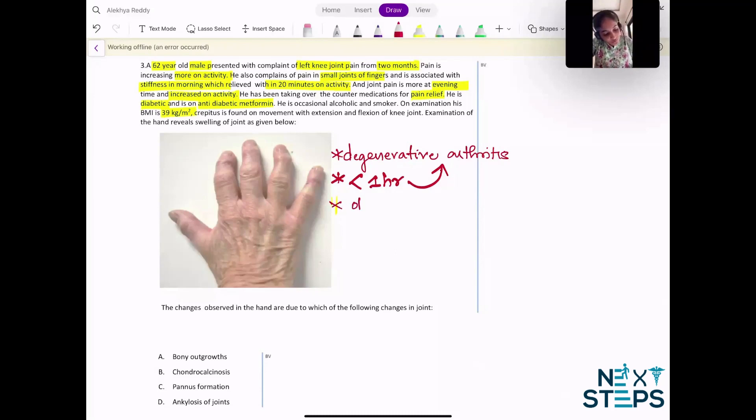On examination he is obese, that is one more clue here. And one more significant clue - patient has crepitus with extension and flexion.